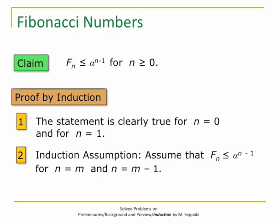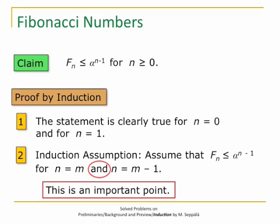Next we make the induction assumption. We assume that the statement FN is at most alpha to the power of N minus 1 is true for N equals M and for N equals M minus 1. We need these two values M and M minus 1, and this is important just in a moment.